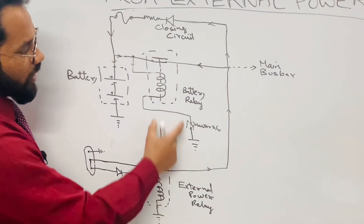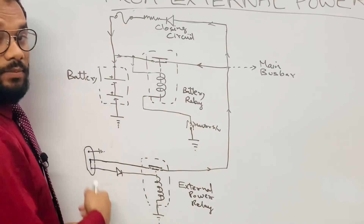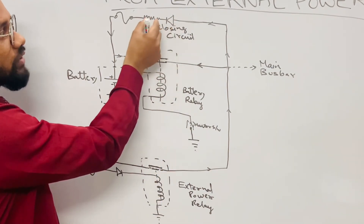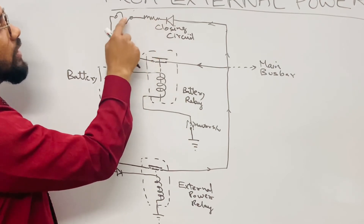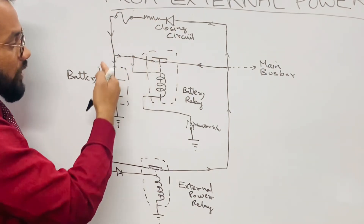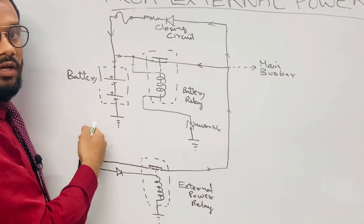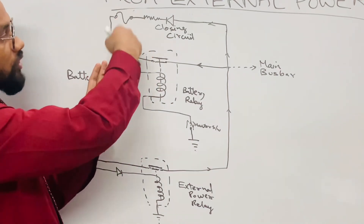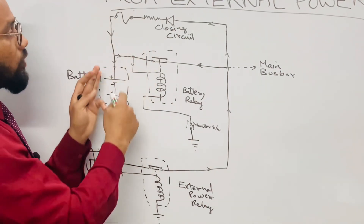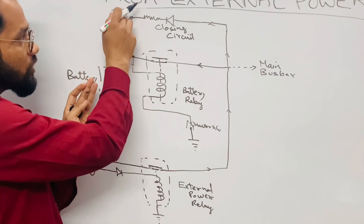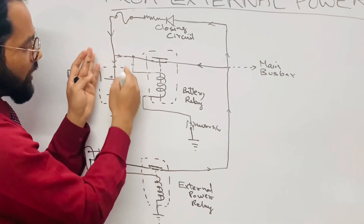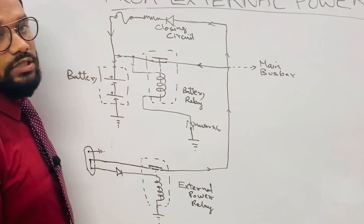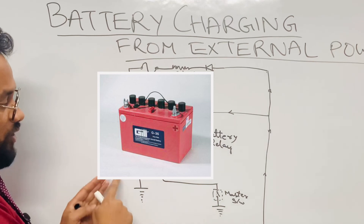In this circuit we have the external power relay, the battery relay, and the master switch for charging the batteries. We also have a diode and a resistor — the purposes of which have been explained. The fuse's purpose is to interrupt the supply whenever the battery is in a shorted state, because if we keep delivering more current it can damage the circuit. The fuse breaks and cuts off the supply, so no current is delivered to the battery when it is shorted.